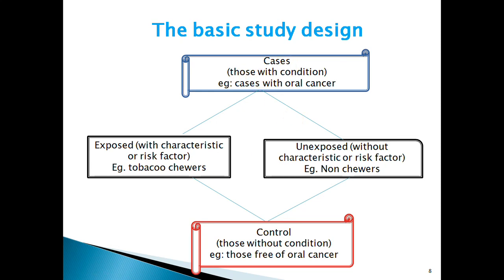Both cases and controls are asked questions about whether they had exposure or not — for example, whether they chewed tobacco or not. Our assumption is that among cases the exposure factor will be more compared to controls. That is what we are trying to prove: in cases the exposure will be more compared to controls. People without the disease will not have as much exposure. Less cause leads to less effect, or less exposure leads to less outcome.